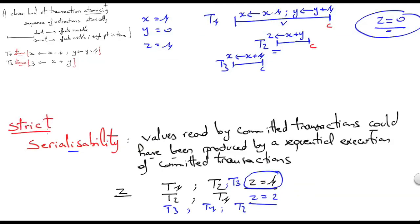So there is a stronger version of serializability called strict serializability. And this says that the values read by committed transactions could have been produced by a sequential execution of committed transactions respecting real-time. So meaning that this sequential execution of transactions should be such that if in real-time a transaction T3 terminates before transaction T2, then in this sequential execution T3 should appear before.